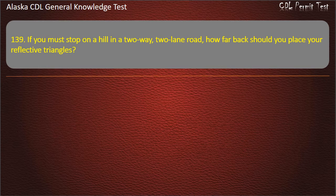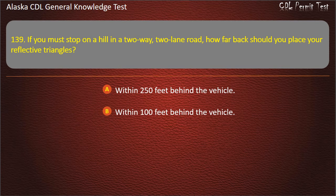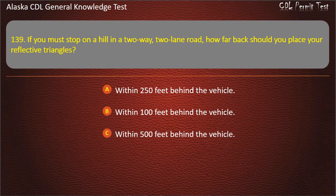Question 139. If you must stop on a hill in a two-way, two-lane road, how far back should you place your reflective triangles? Within 250 feet, within 100 feet, or within 500 feet behind the vehicle. Answer: Within 500 feet behind the vehicle.